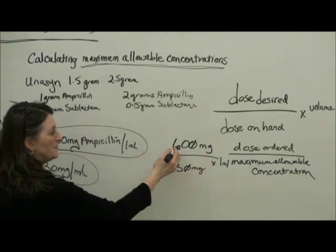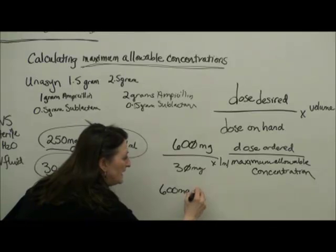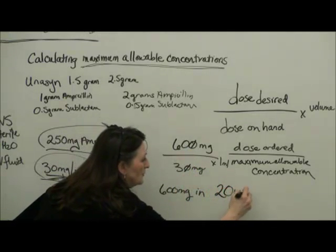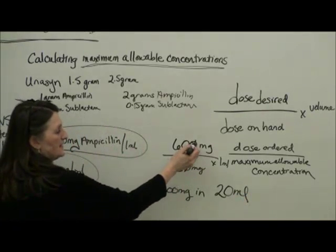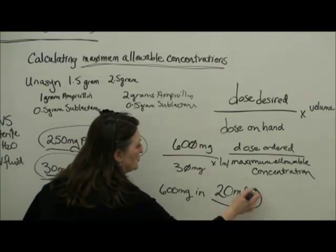This tells me that my 600 mg dose has to be in a total of 20 mL. If I divide 600 by 30 or 60 by 3, I get 20.